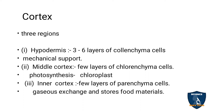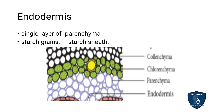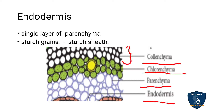The cortex is divided into three regions. Hypodermis — below the epidermis — is made up of collenchyma and gives mechanical support. The middle layer is chlorenchyma, parenchyma filled with chloroplasts, and its function is photosynthesis. The next layer is parenchyma, whose function is storage. The innermost layer of the cortex is endodermis, made up of a single layer of parenchyma cells filled with starch grains, so it is called the starch sheath.